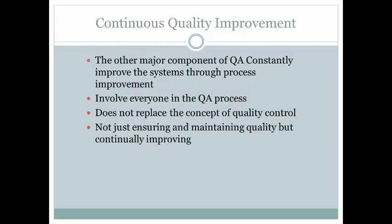Continuous Quality Improvement is the other major component of a QA program. It tells us that we need to constantly improve the systems through process improvement. It involves everyone in the QA process and does not replace the concept of quality control. Quality control is essentially making sure that the equipment itself is up to par, while continuous quality improvement is making sure that the processes in which that equipment is involved are up to par. It ensures and maintains quality and continually improves the system.